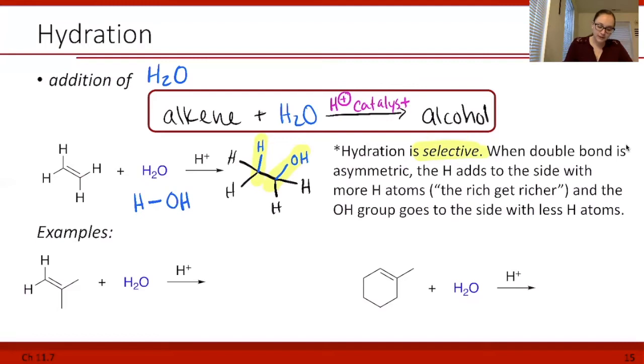If we look at this reaction down here, we have our alkene adding water with our acid catalyst. Let's draw out the molecule without our new bonds in it. Then I'm going to draw my two blue bonds to show where my H and OH are going to go, and then I have to decide which side gets the hydrogen, which side gets the oxygen.